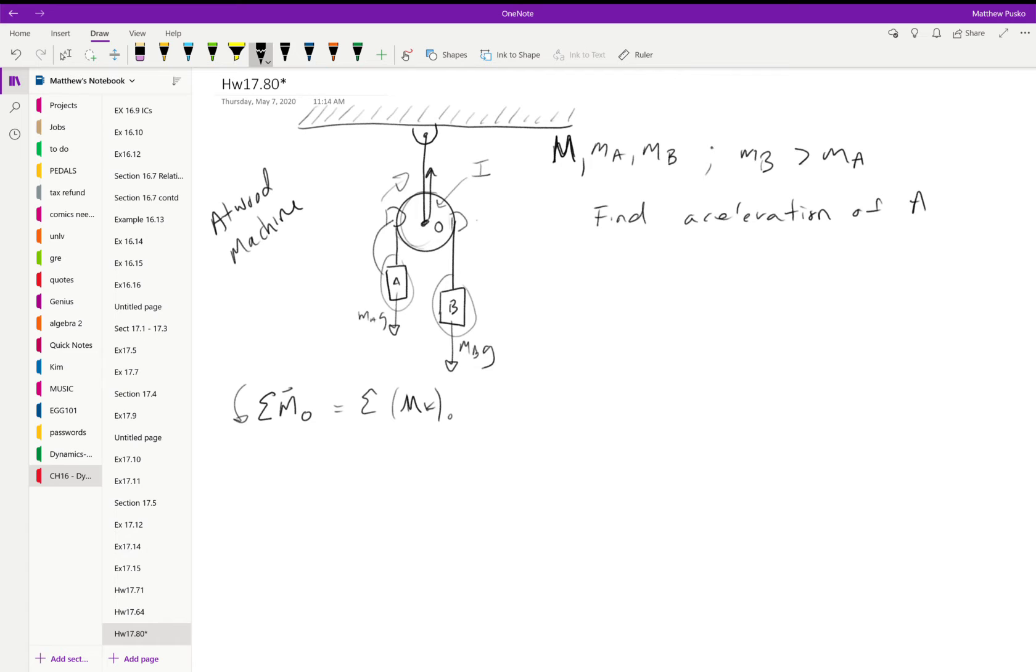Let's take a look at homework 1780. It's an Atwood machine we've looked at these before, except now we have to consider the fact that the disc or the pulley has a moment of inertia itself. So we have the mass of the big pulley, we have mass A and mass B, and they tell us mass B is bigger than mass A.